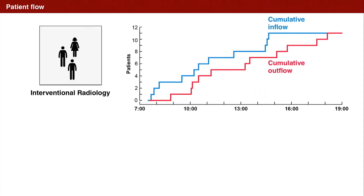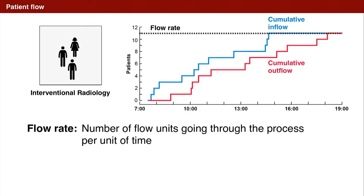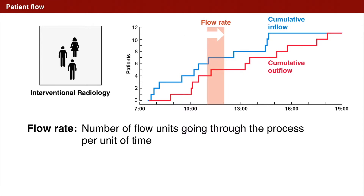The blue graph captures cumulative inflow and the red graph is cumulative outflow. These two graphs meet at the time the last patient has left the unit. First, observe that we have taken care of 11 patients today. We call this number the flow rate. The flow rate measures how many patients we handled in a given period of time — in our case, one day. We can also think of patient flow per hour; about one patient flows through the process per hour.